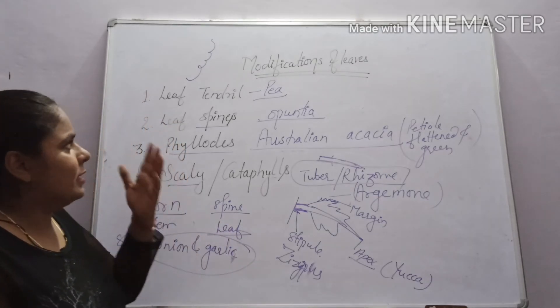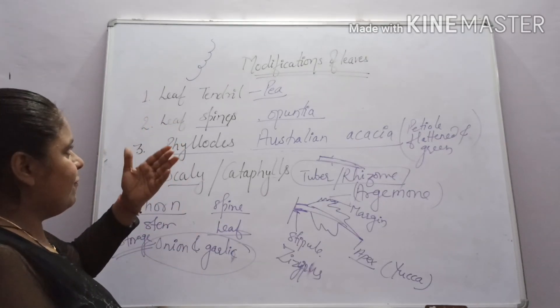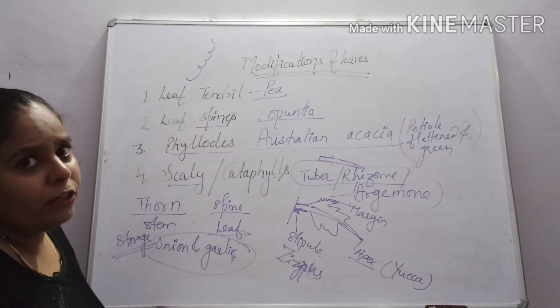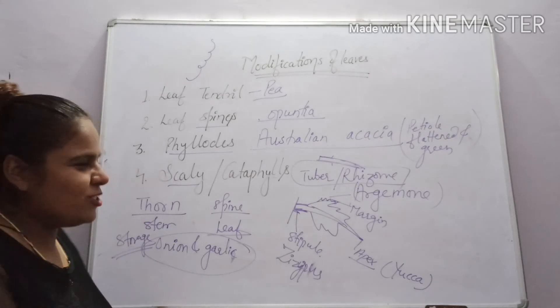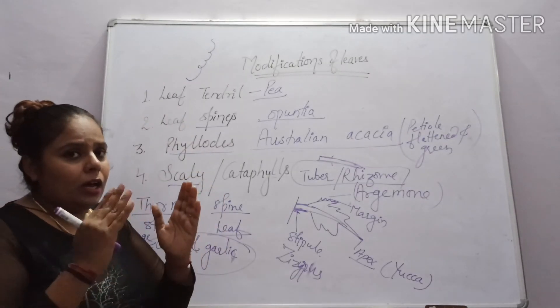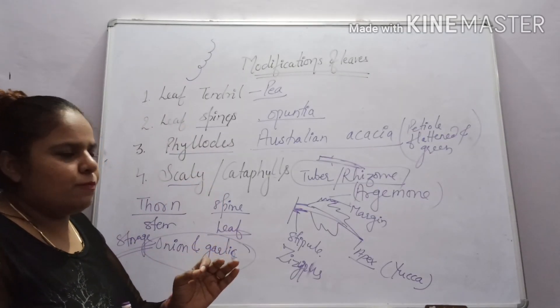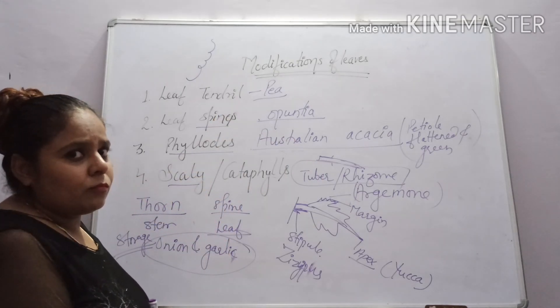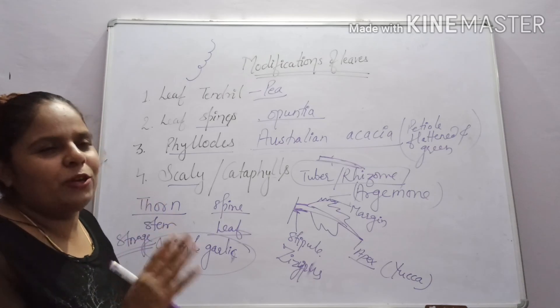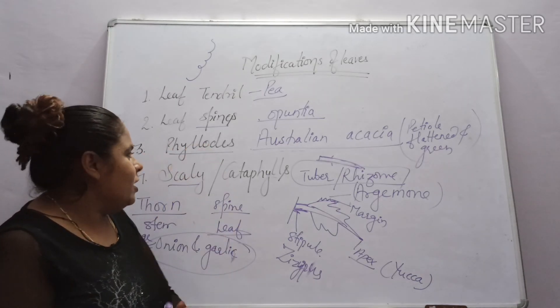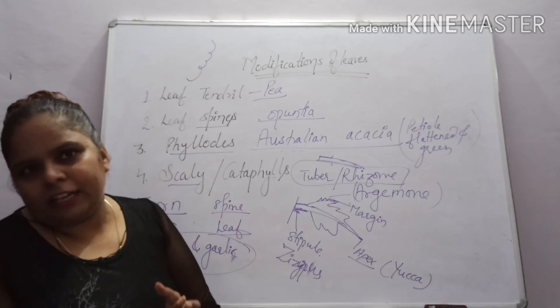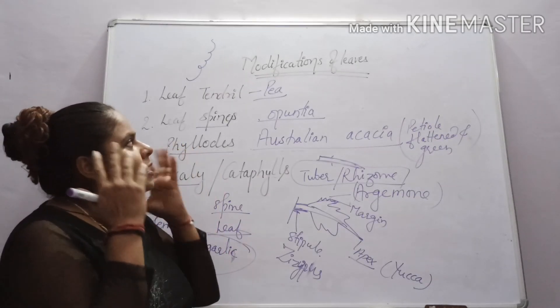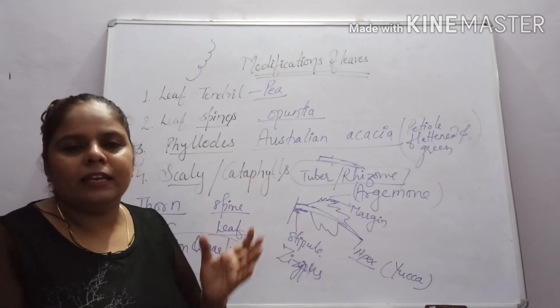Then the modification of leaves. Leaf may be for the clamping function as a tendril. To check the rate of transpiration, if it changes, it is spine. And if it is to check the rate of transpiration, then photosynthesis on the petiole - it is phyllode. And if it is protection, then it is scaly cataphylls. This is simply all about the leaves. Thank you.